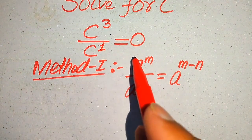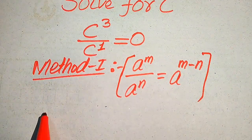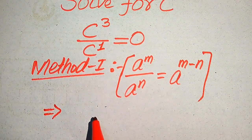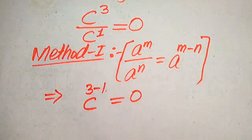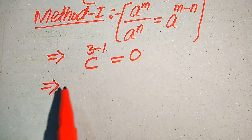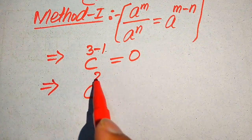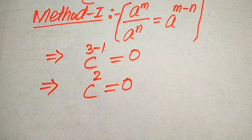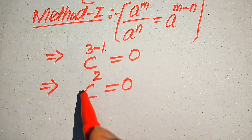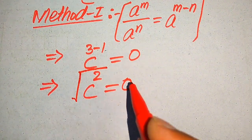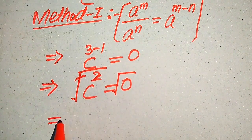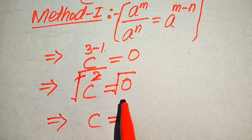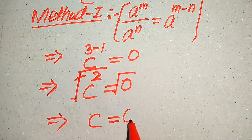So we move 1 towards 3 according to this exponent law, and we write our equation as c to the power of 3 minus 1 equals 0. This gives us c squared equals 0. Since c squared equals 0, we take the square root on both sides to remove the exponent of 2. The square root and the 2 cancel, giving us c equals the square root of 0, which is 0.